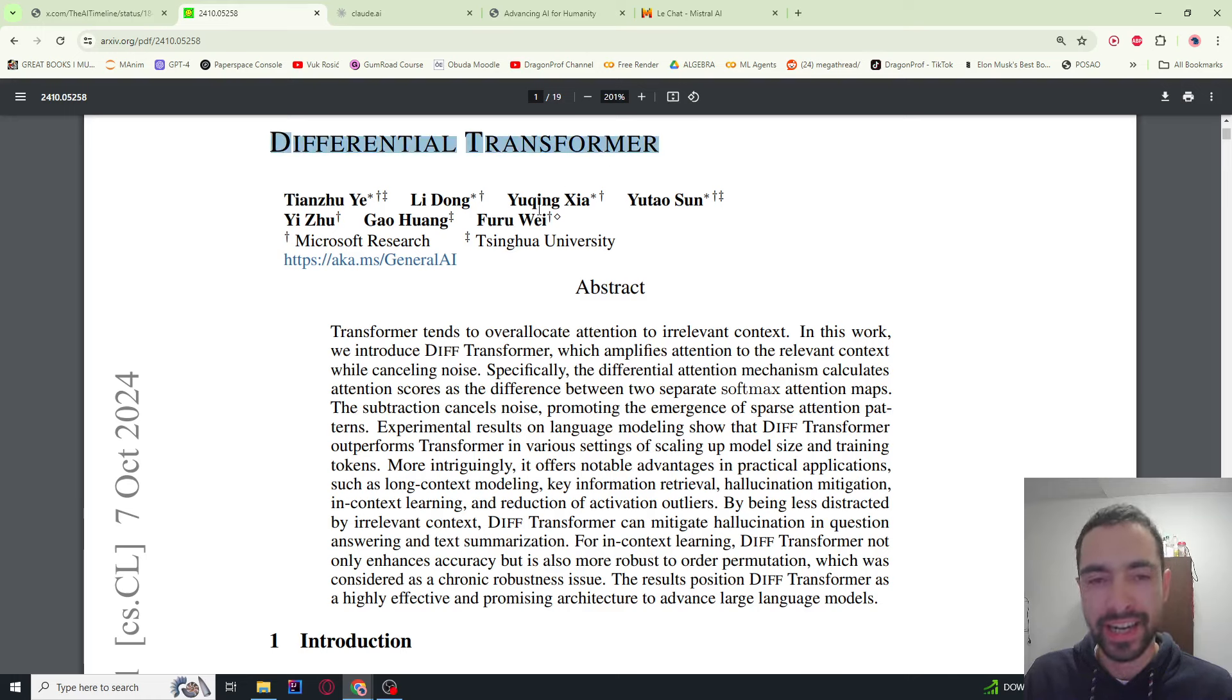New differential transformer architecture reduces the size of the model by about 35% and the necessary tokens to train it by also about 35% while keeping the same performance. It does this by amplifying attention to relevant tokens in the context and canceling out attention to the irrelevant tokens.